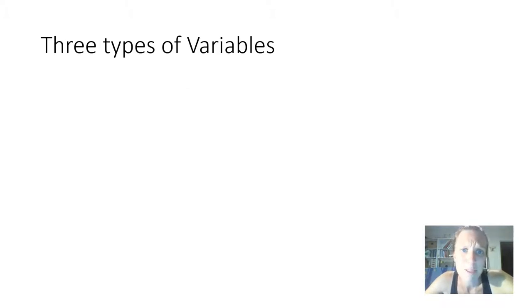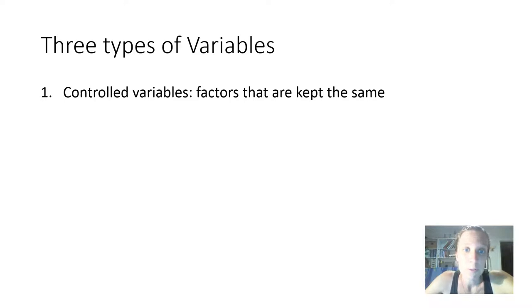There are three types of variables. There are controlled variables, and these are factors that have to be kept the same every time you repeat your experiment.